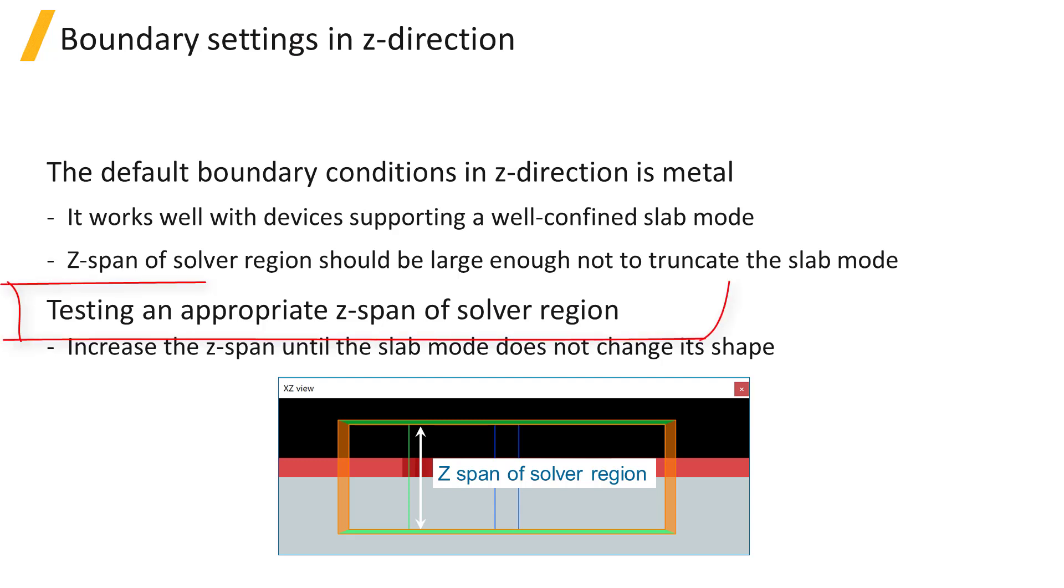You can test whether the Z-span is large enough by increasing the Z-span of the solver region and making sure that the calculated slab mode profile does not change. If it does change, then a larger Z-span is needed.